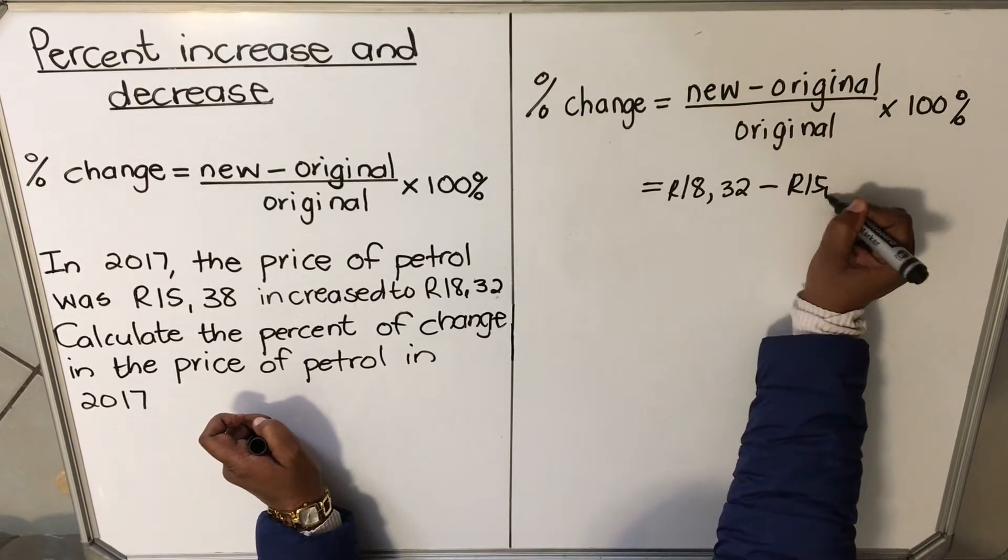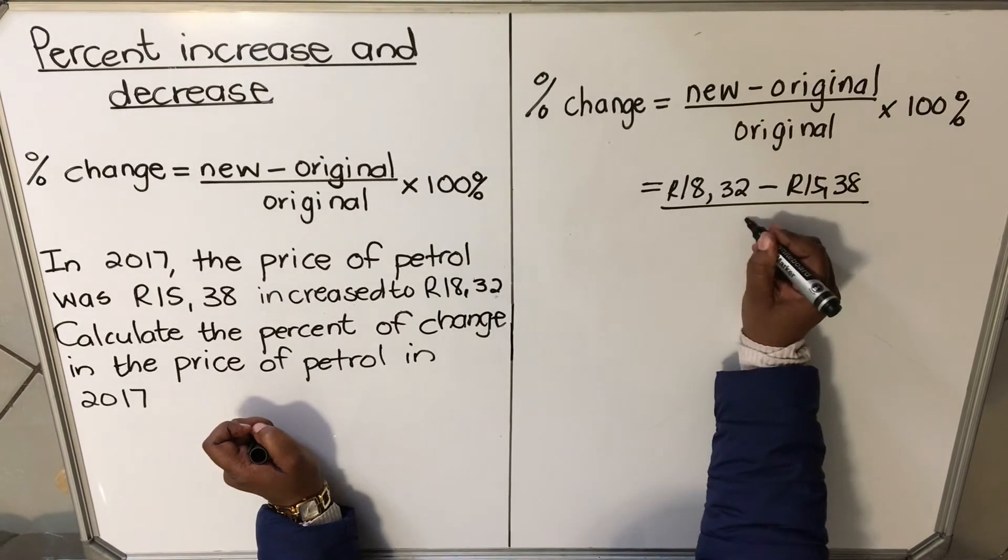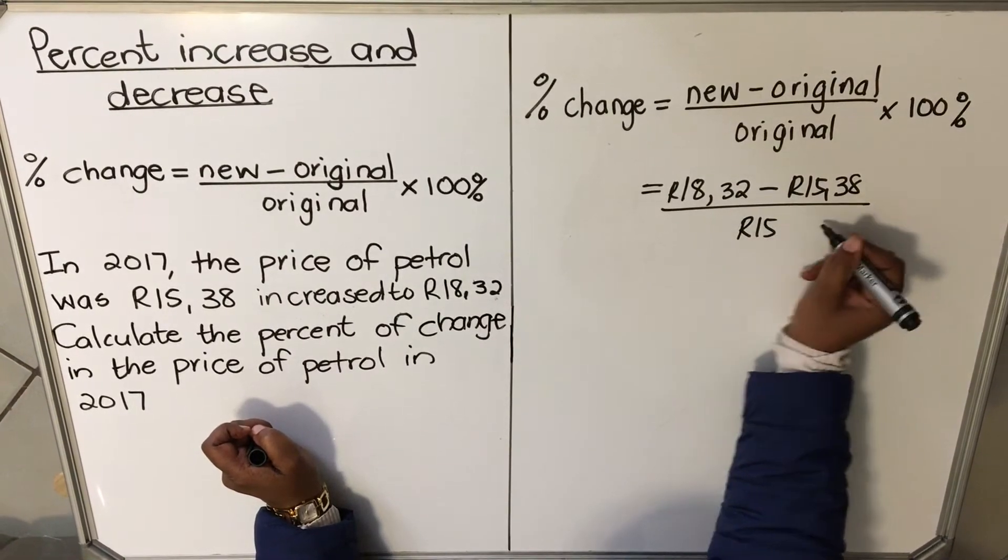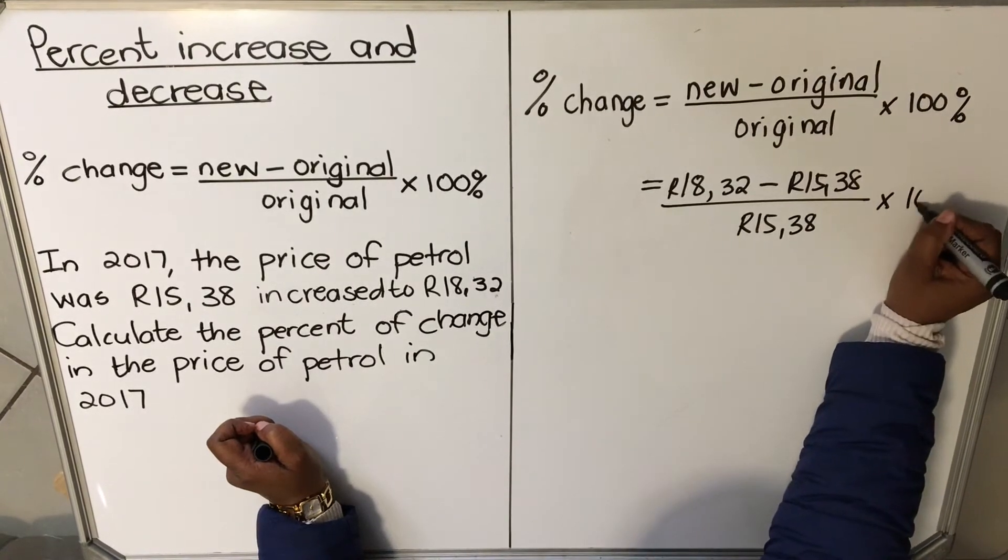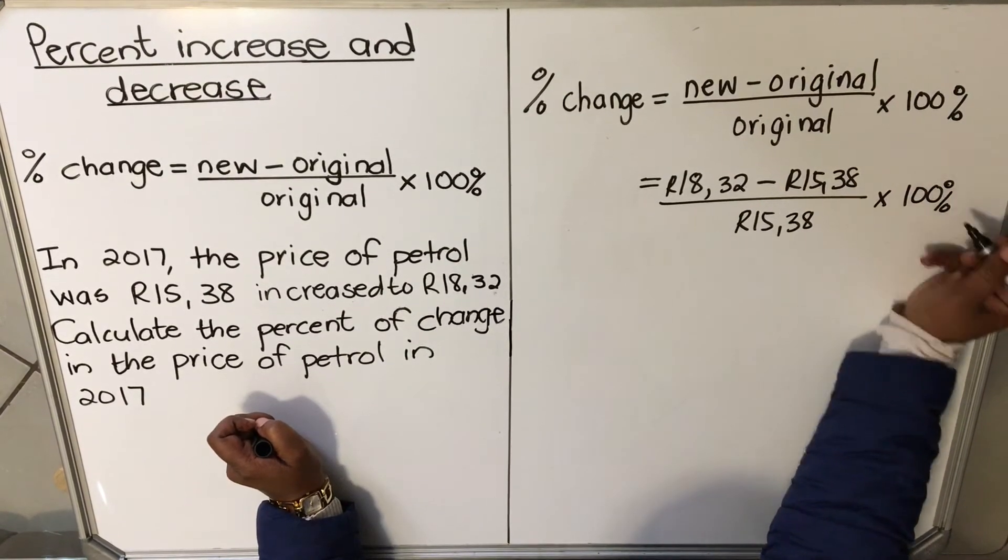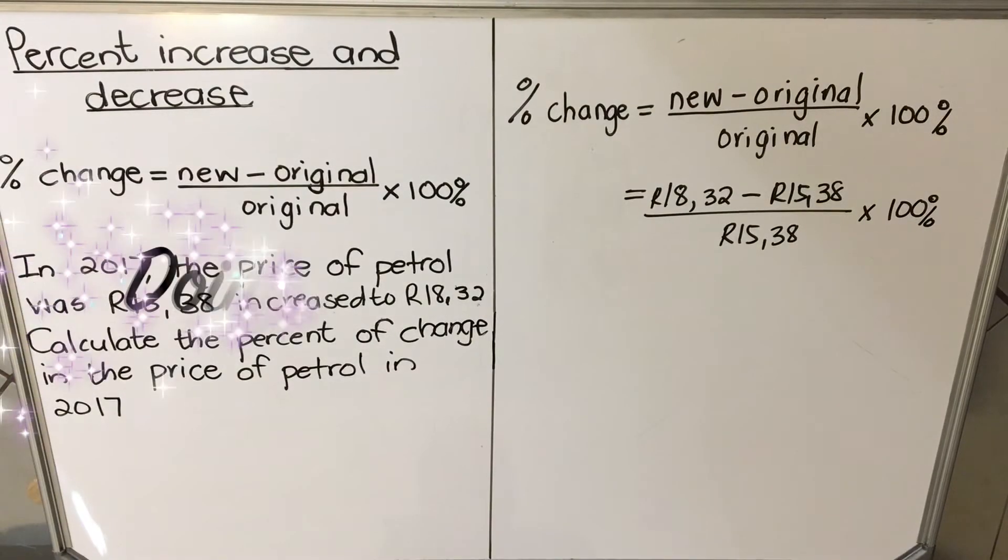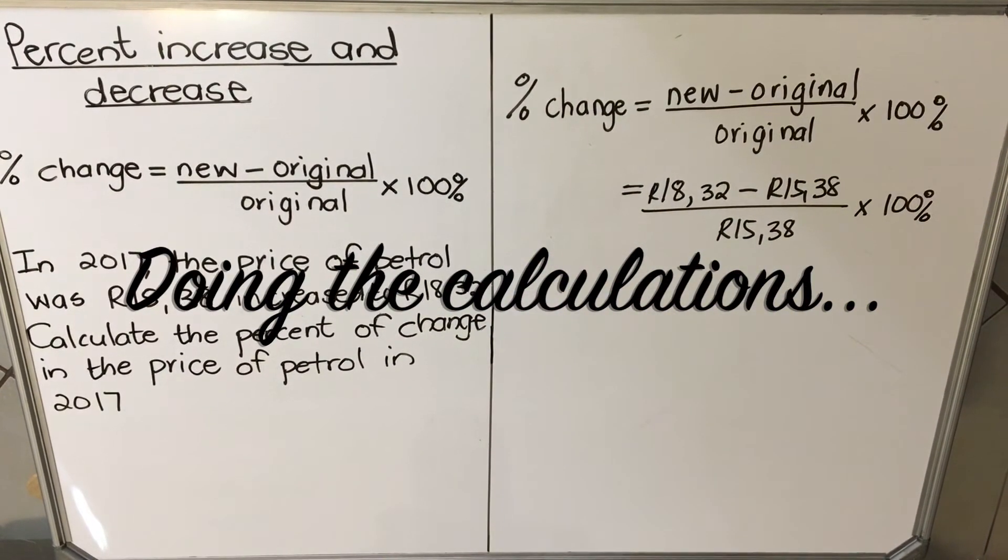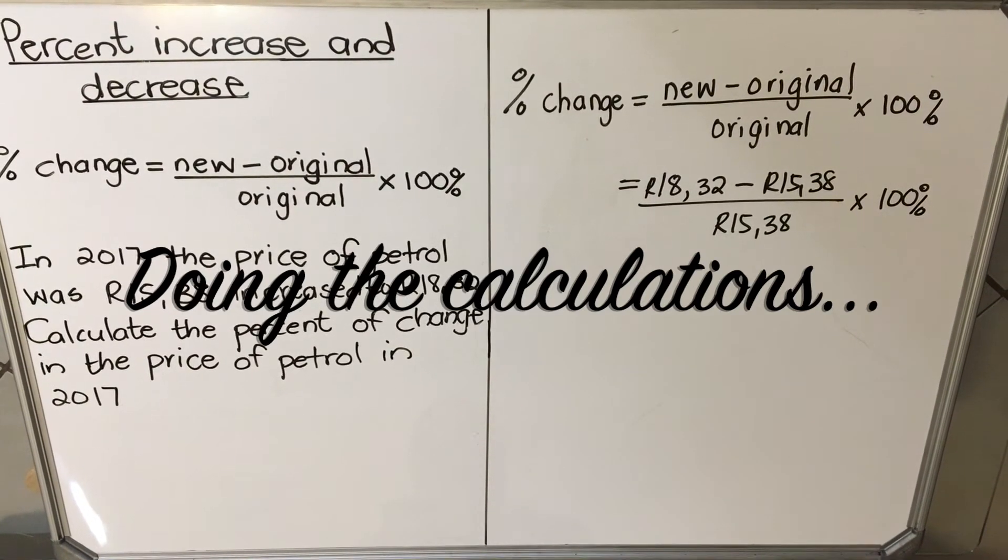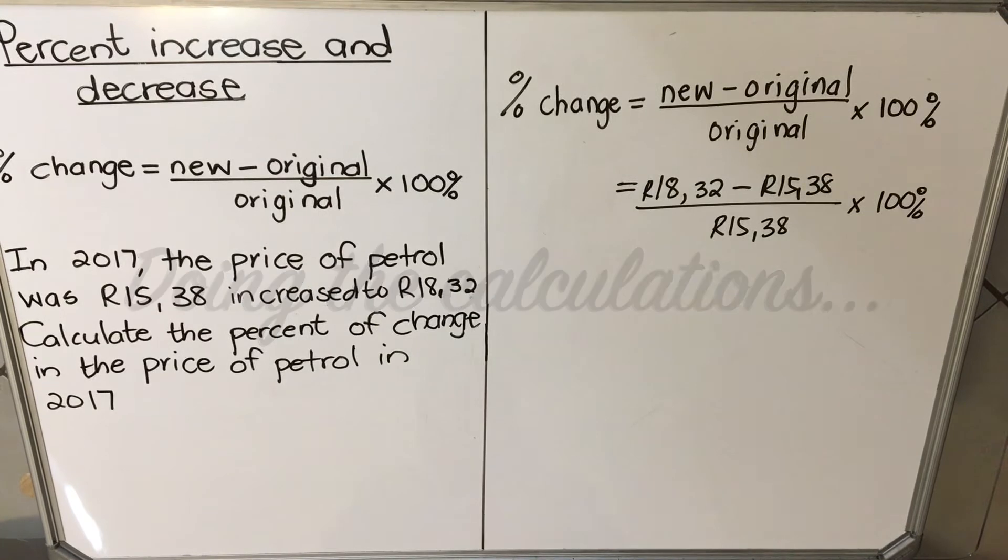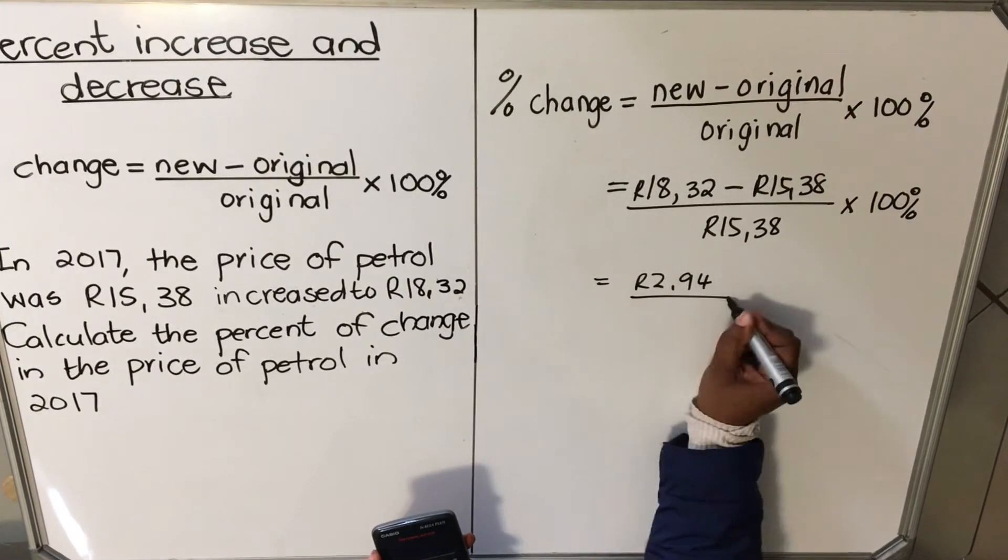Then you're going to multiply everything by 100 percent. Let's take our calculator and do it right. It's R18.32 minus R15.38, then you get R2.94, divided by R15.38.